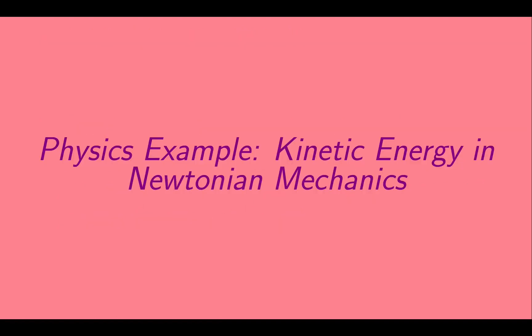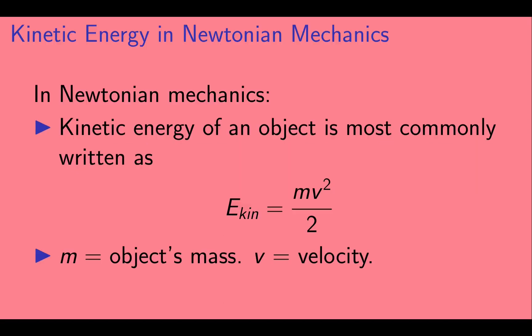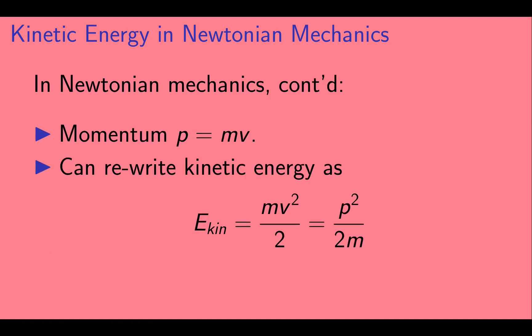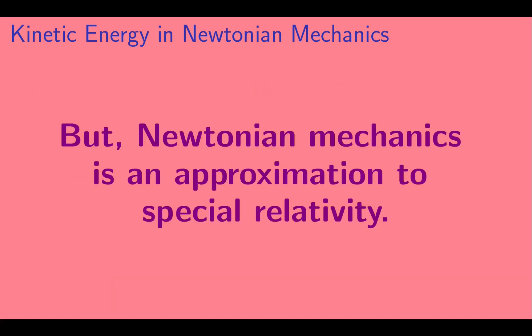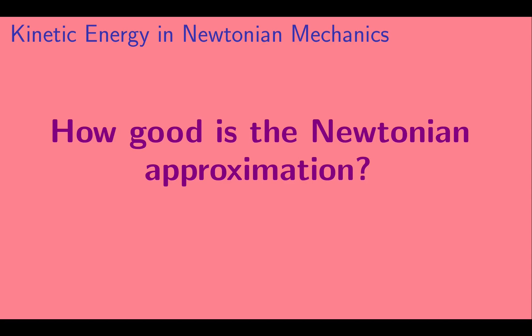Now let's look at a specific example: the expression for kinetic energy in Newtonian mechanics. In Newtonian mechanics, the kinetic energy of an object is most commonly written as mv² / 2, where m is the object's mass and v is its velocity. Also in Newtonian mechanics, the momentum p equals mv. So we can rewrite the kinetic energy mv² / 2 as p² / 2m. This latter expression is the one we'll use here. We're going to look at the fact that Newtonian mechanics is an approximation to special relativity, and ask: how good is the Newtonian approximation, and when is it okay to use?